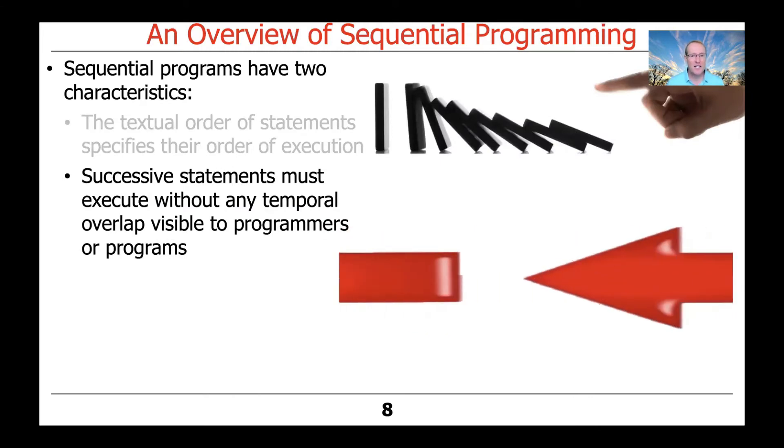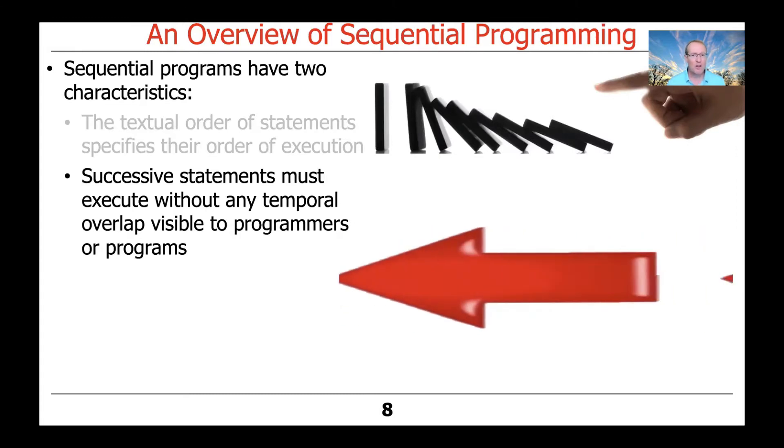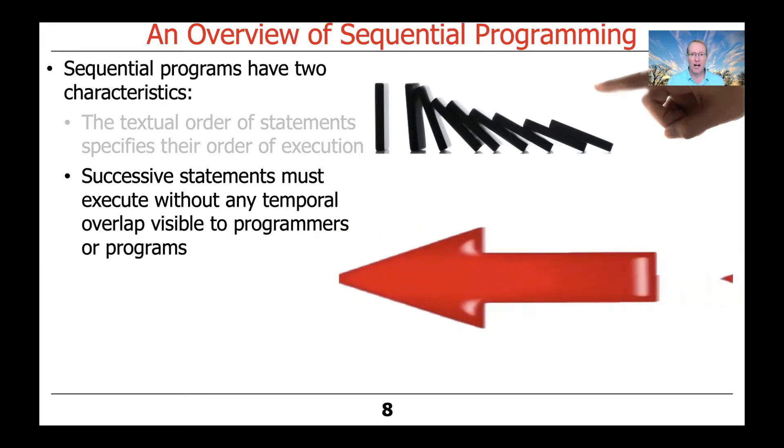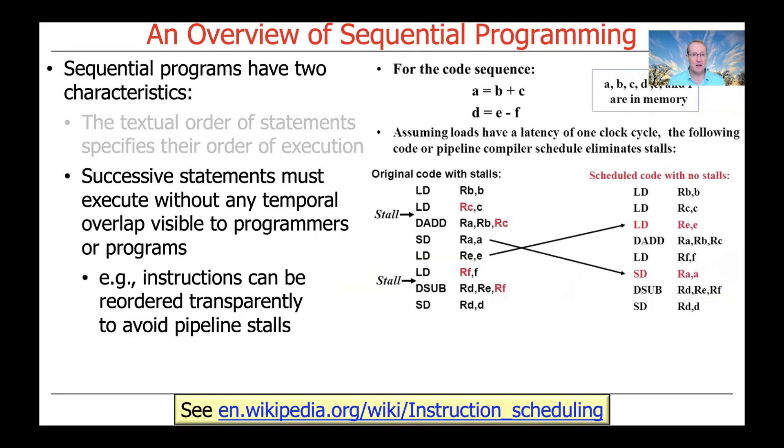The second characteristic is that successive statements must be executed without any temporal overlap that's visible to programmers or programs or end users. The idea here is that things go one after another, at least logically. That doesn't mean there can't be some really clever reordering taking place behind the scenes, for example at the assembly code level or the pipeline cache level. Modern platforms can do instruction level reordering for pipeline purposes to keep pipelines from stalling. But whatever gets done, those reorderings will not be visible to the programmer, other than perhaps your program runs a little faster. Things have to go sort of one after another, which is really what sequential means.